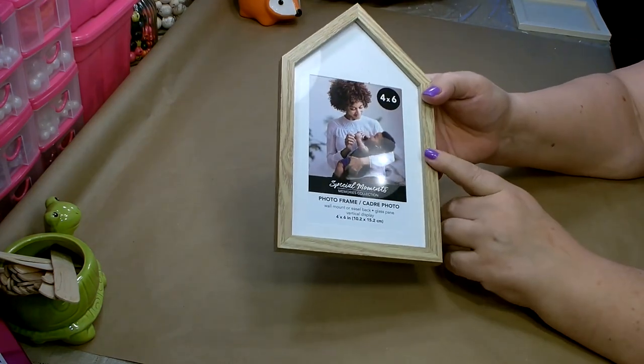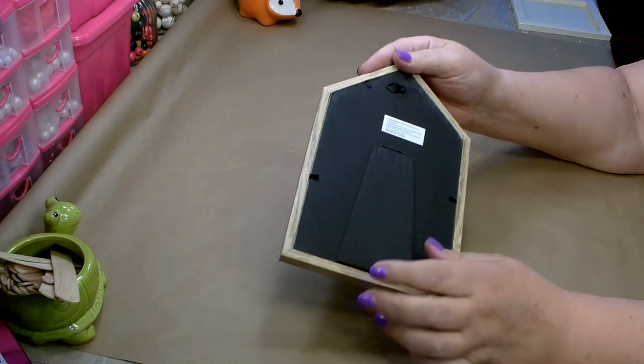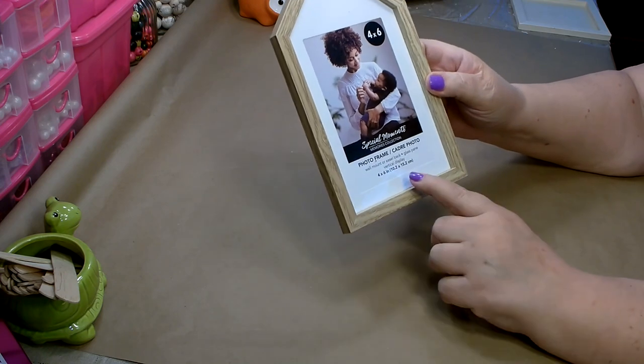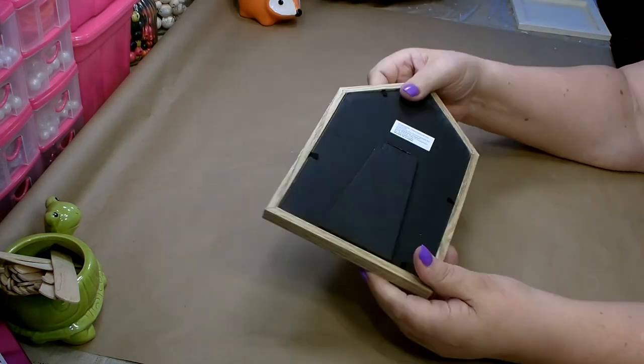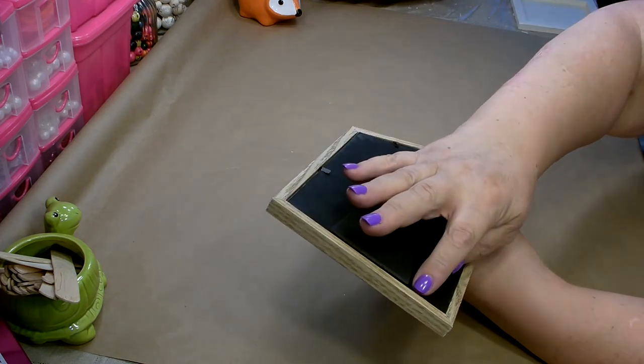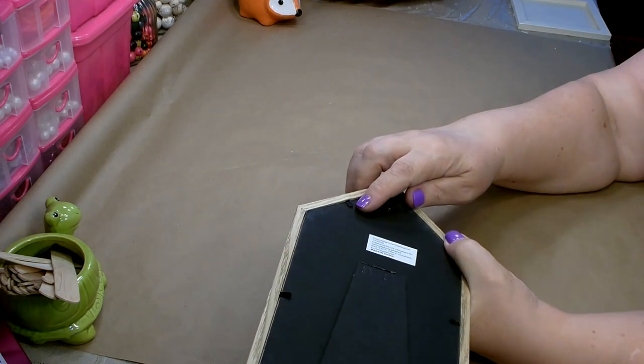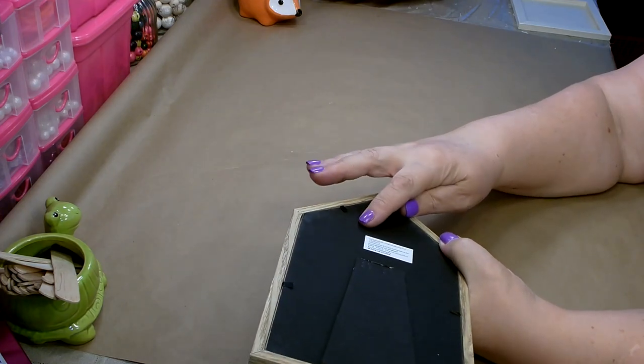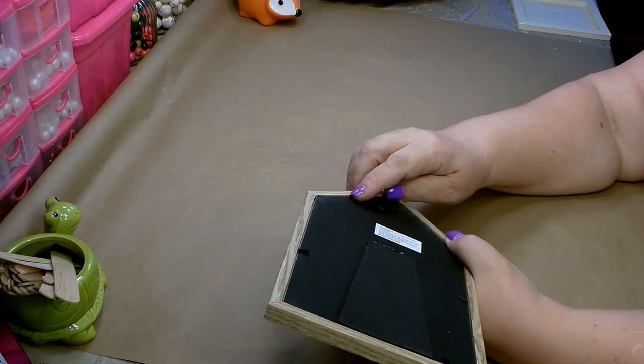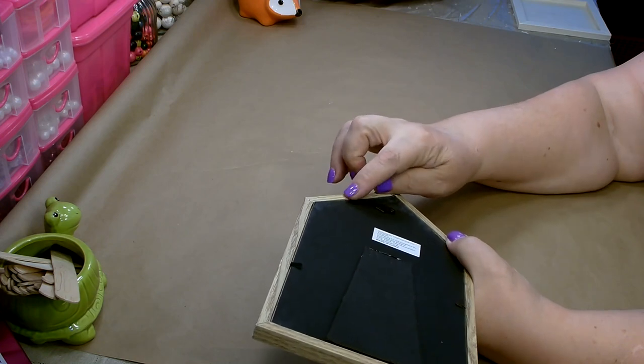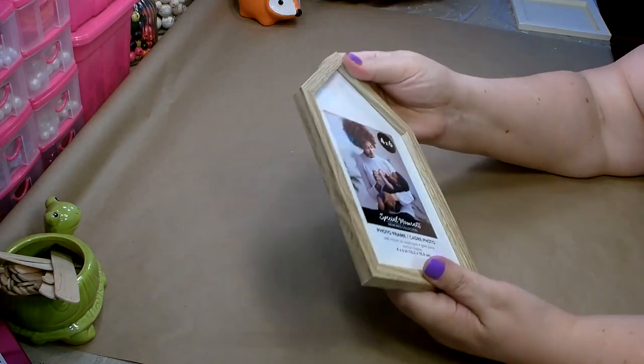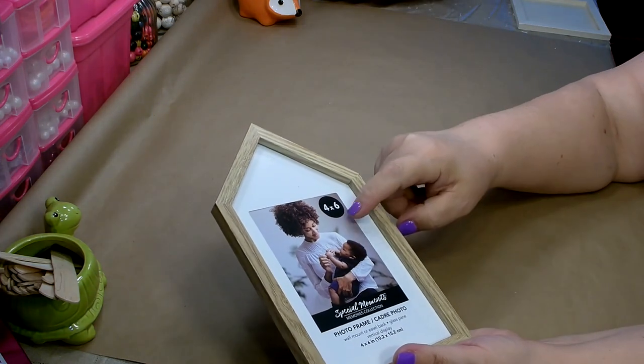First thing you want to do is take apart your photo frame. Remove the back and everything inside. We're using just the frame and the glass. Once you get everything out, remove these little prongs that hold everything in the back. I just use my wire cutters and gently pull them out. Be careful because this is not real wood and if you pull too hard it will break part of the frame. So just be cautious when removing it. We just need the frame and the glass.